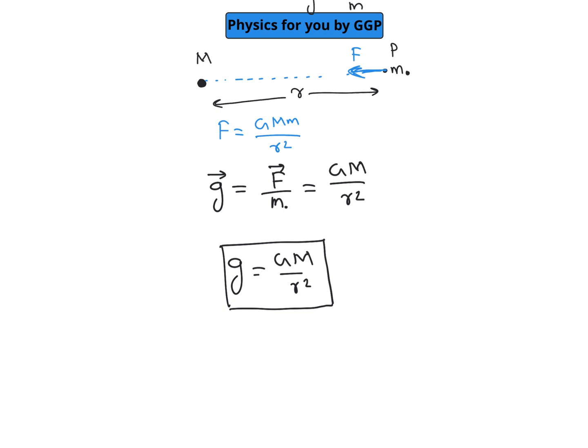And if you are talking about the direction of gravitational field, gravitational force is always attractive in nature. So we can say that direction of this gravitational field is towards the center of mass M.